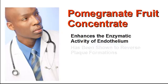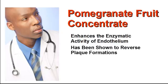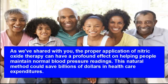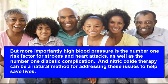In peer-reviewed clinical studies, pomegranate fruit concentrate has been shown to reverse plaque formations within the vascular system because of its ability to increase nitric oxide production. The proper application of nitric oxide therapy can have a profound effect on helping people maintain normal blood pressure readings. This natural method could save billions of dollars in health care expenditures. But more importantly, high blood pressure is the number one risk factor for strokes and heart attacks, as well as the number one diabetic complication, and nitric oxide therapy can be a natural method for addressing these issues to help save lives.